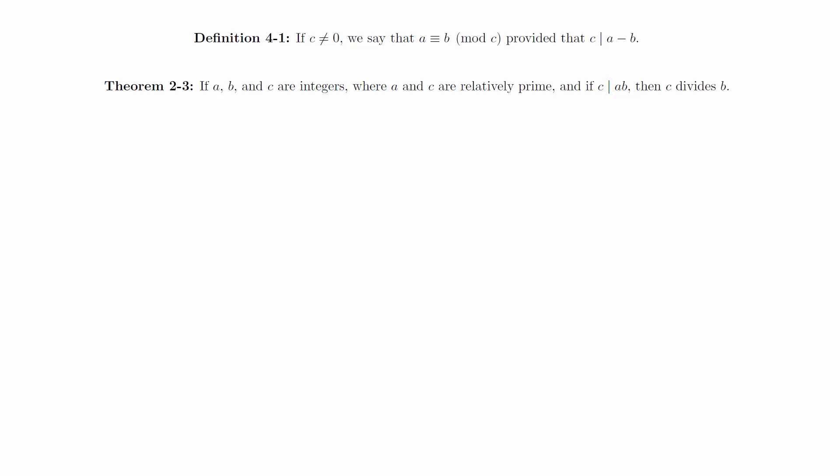With this statement in place, we will prove our theorem. Theorem: If bd is congruent to b d prime mod c, and if the GCD of b and c is 1, then d is congruent to d prime mod c.